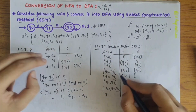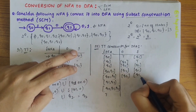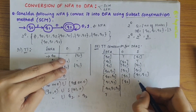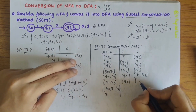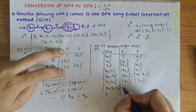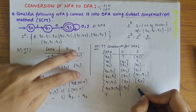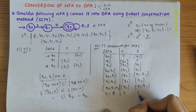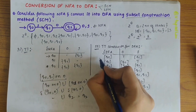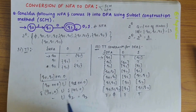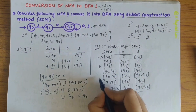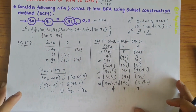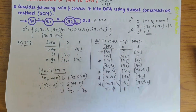For Q0,Q2 on 0 we get Q2, and on 1 we get Q1,Q2. For Q1,Q2 on 0: Q2 union Q2 gives Q2. Q1,Q2 on 1 gives Q2. For Q0,Q1,Q2 on 0 gives Q2, and on 1 gives Q1,Q2. For ∅ on any input it is ∅. Q0 is marked as the start state with an arrow, and wherever Q2 appears in a state it is marked with a star as a final state.